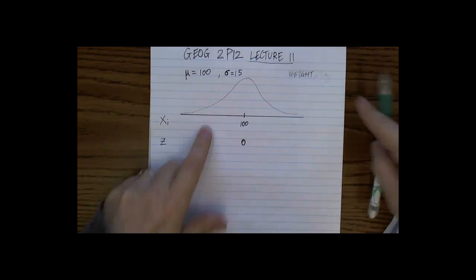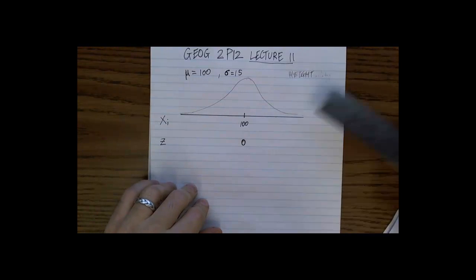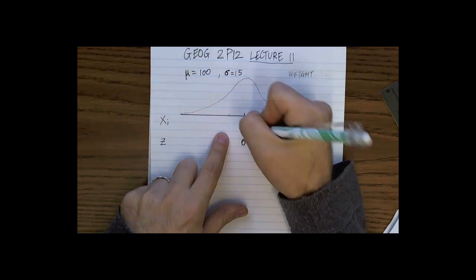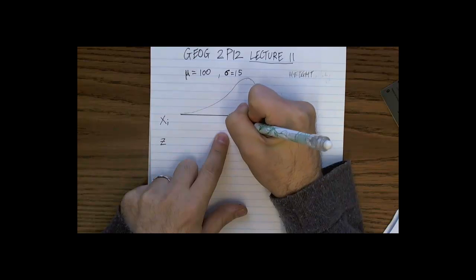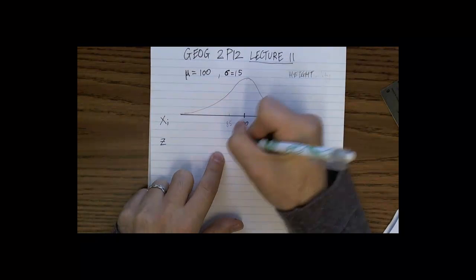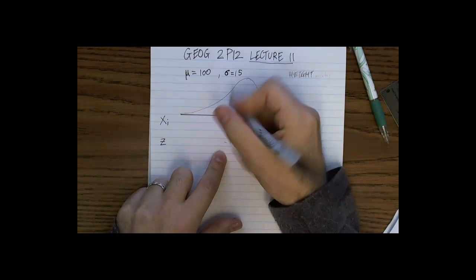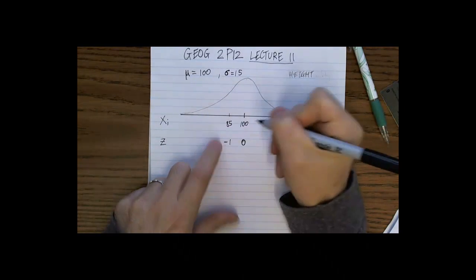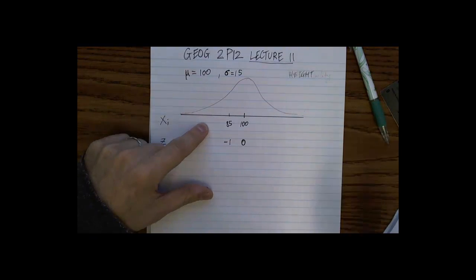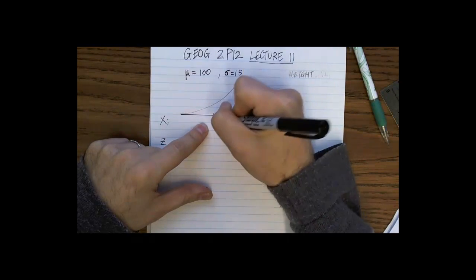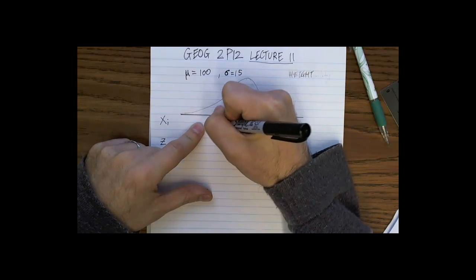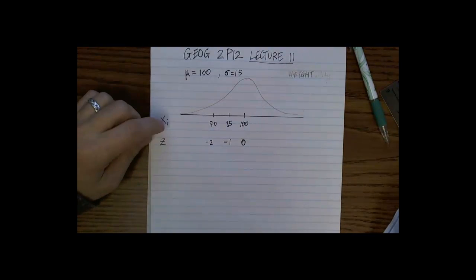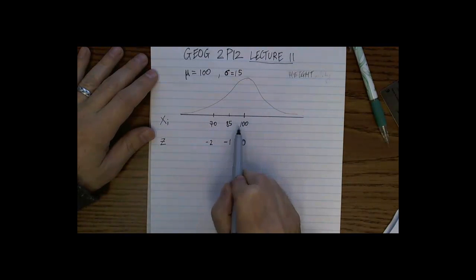We know that if we go about one standard deviation below, we are then at 85, right? And that gives us a negative one on the z-score. So 85 centimeters. And then 15 centimeters below that would put us at about 70 centimeters. And that would correspond to two standard deviations below the mean, right? So how am I getting this?